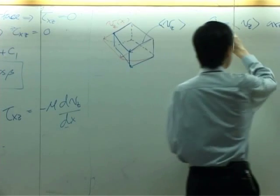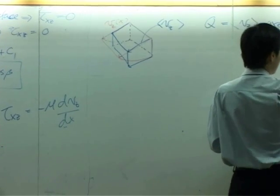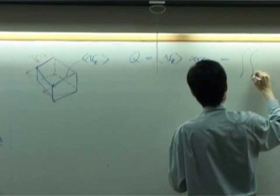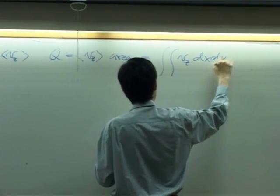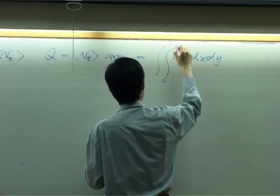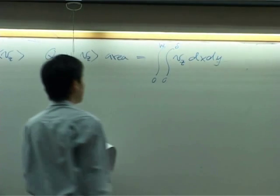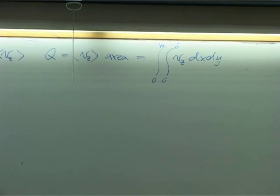So by definition, q is, if you go back to integrate, you get vz dx dy from 0 to delta, c of 2w. That's the volumetric flow rate that you can calculate easily.